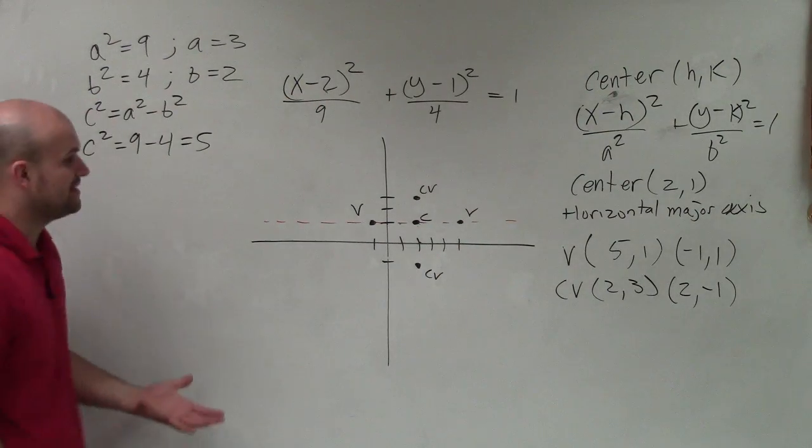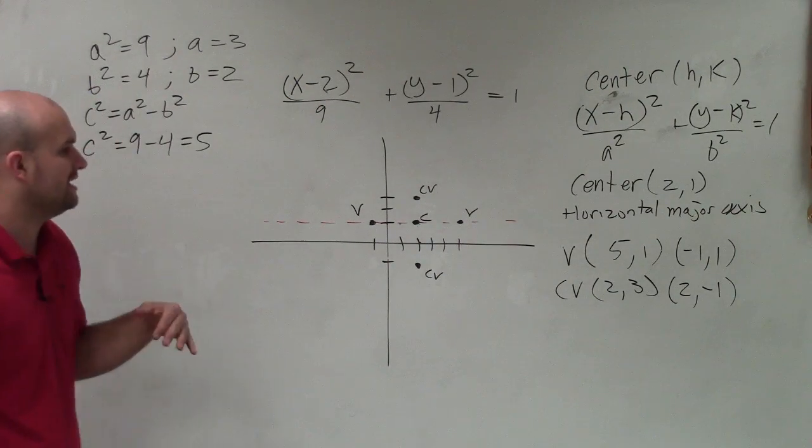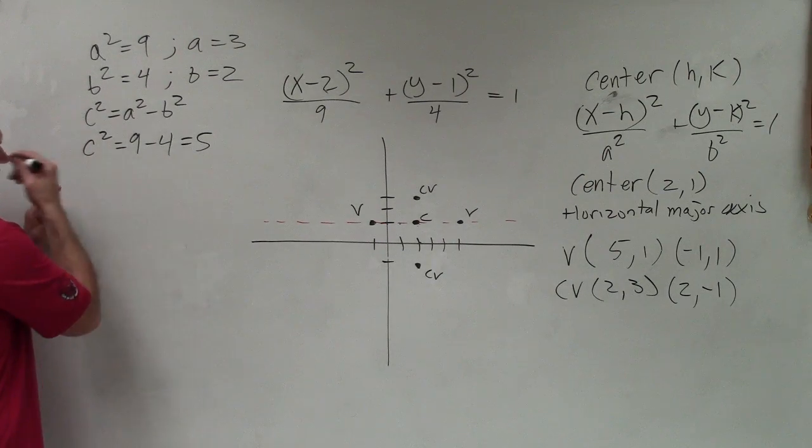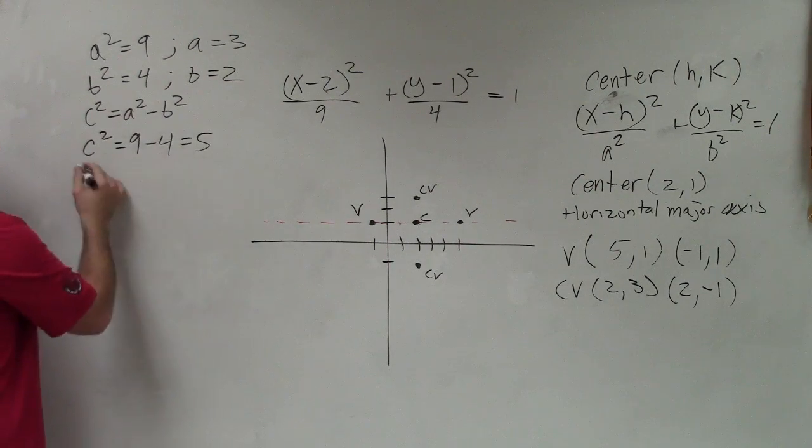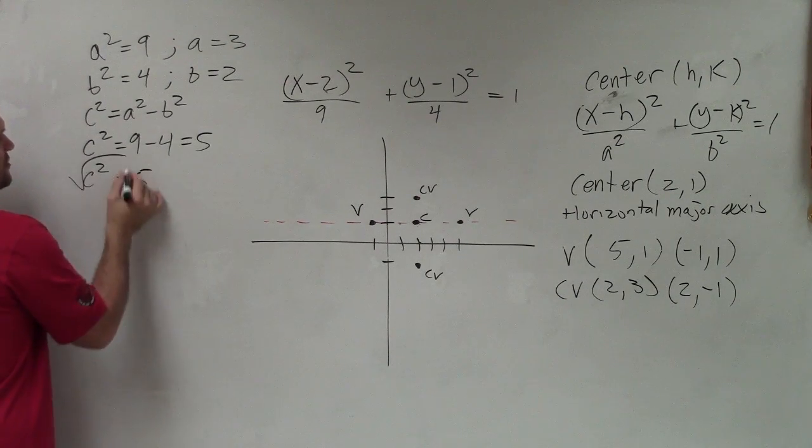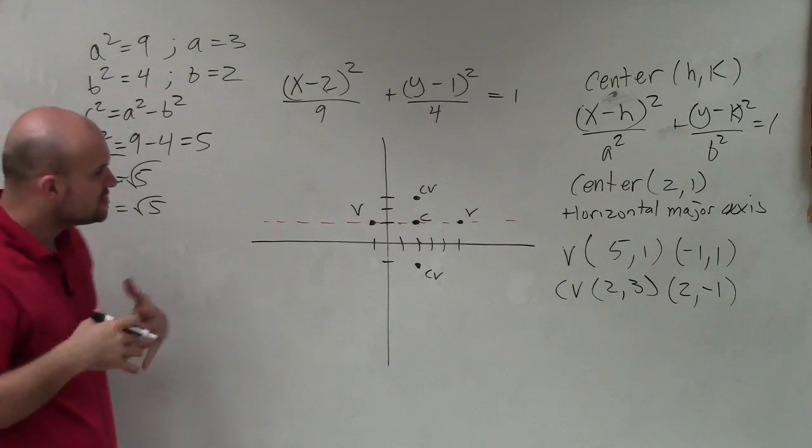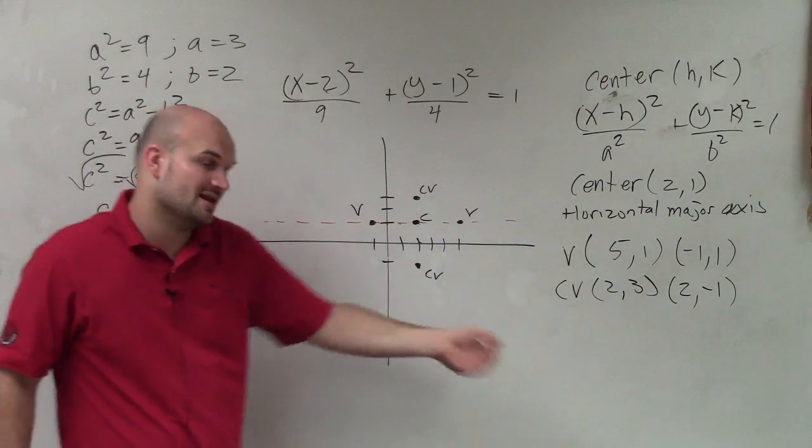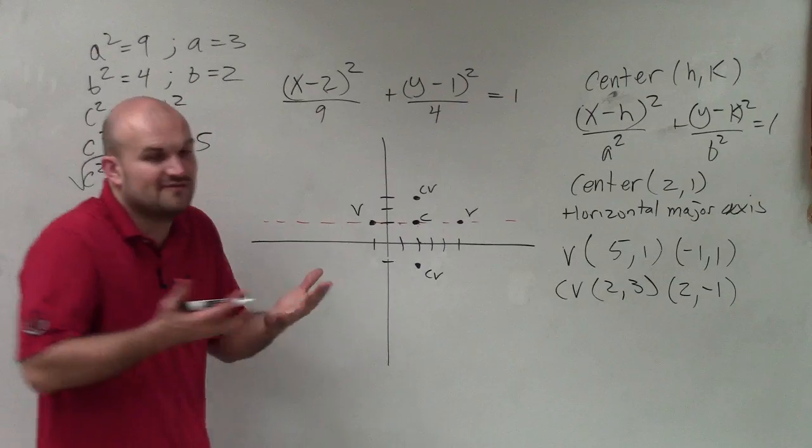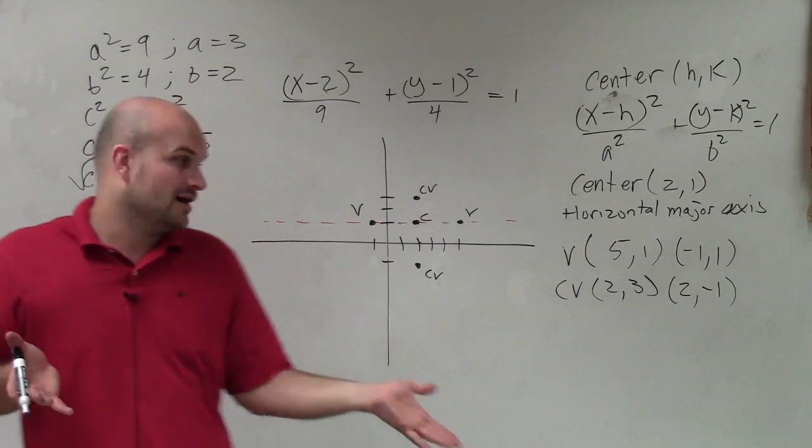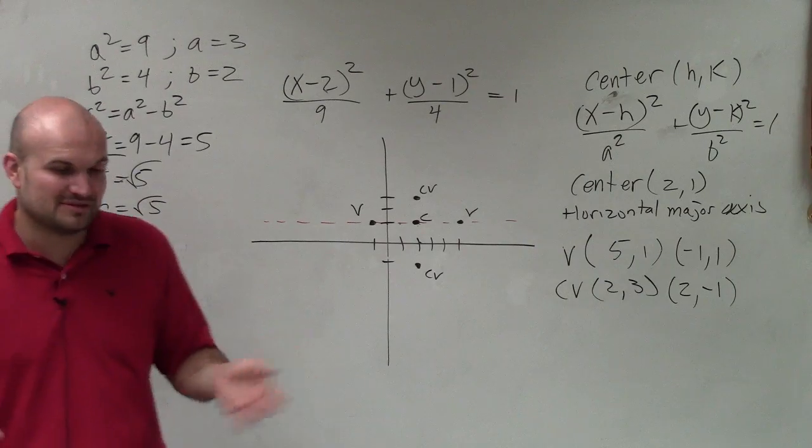Now lastly, what I need to do is be able to identify what is my foci. My foci is giving me distance of the square root of 5. If I know c² = 5, take the square root of both sides, c = √5. I need to go √5 to the right and √5 to the left. Now the square root of 5 is going to be anywhere between 2 and 3.